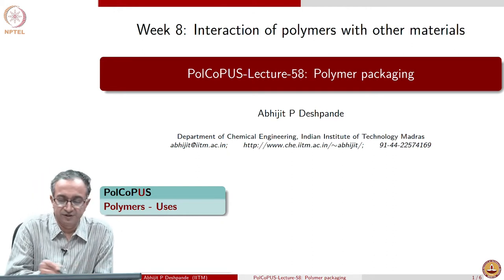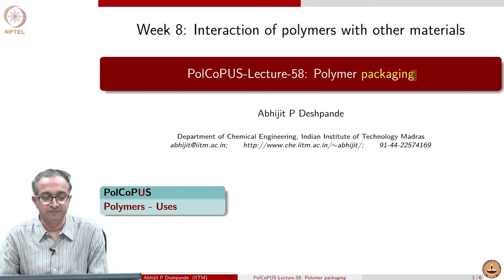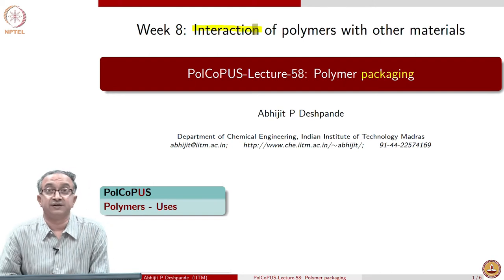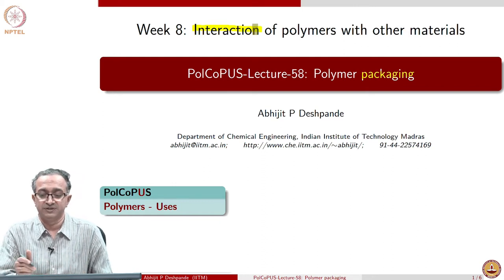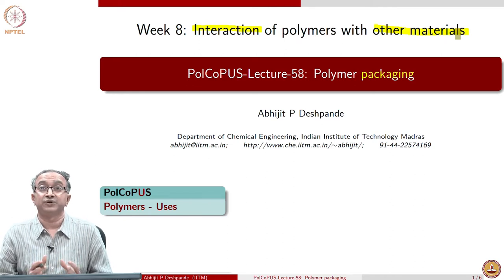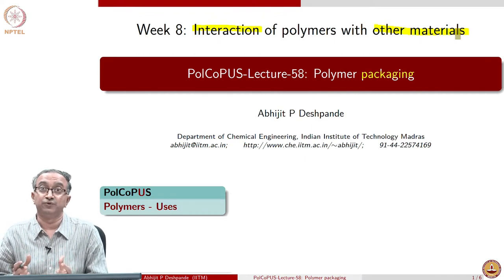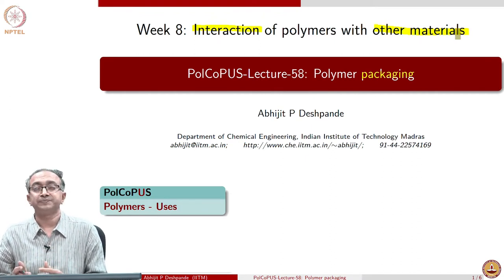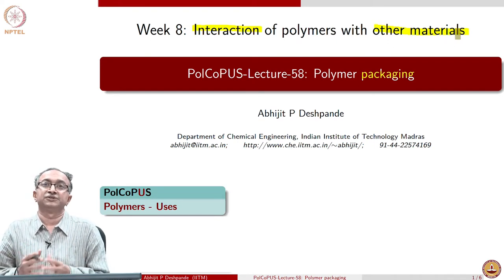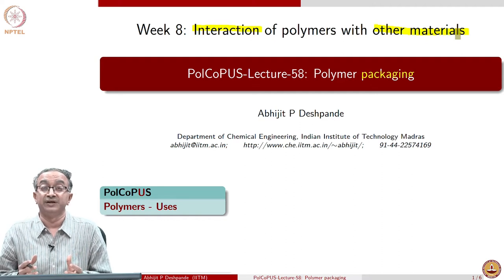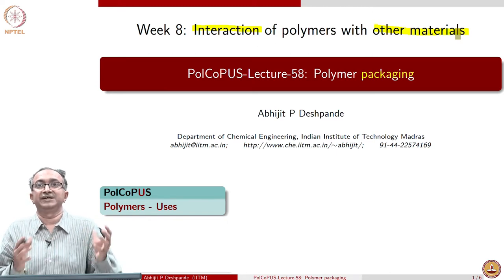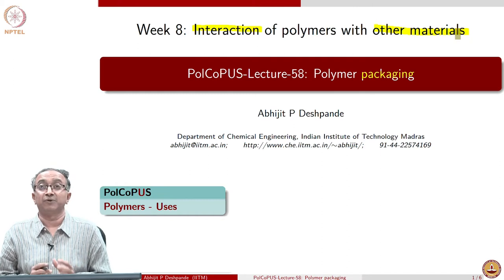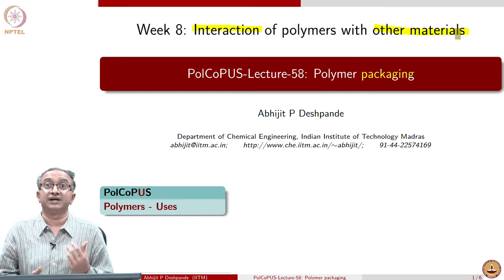Along the same lines, we will continue by looking at applications of polymers in packaging. A lot of what we discuss this week will be related to the interaction of polymers with other materials. Packaging is a case where a polymeric material is trying to protect something on one side — it could be food or another component — from the external environment, which could involve oxygen, UV radiation, or mechanical load. So packaging is like a separation medium between what has to be protected and the external environment, and the interaction of polymers both to the inside and outside is extremely important.